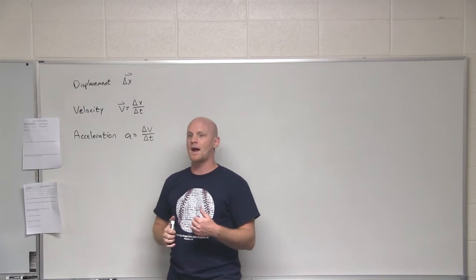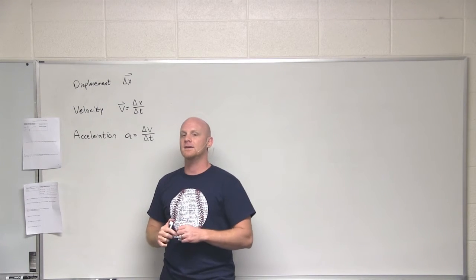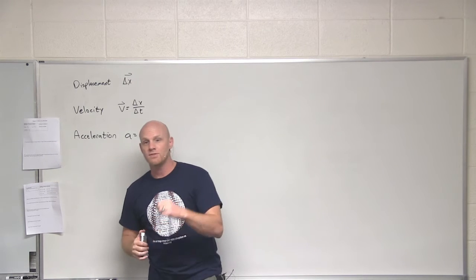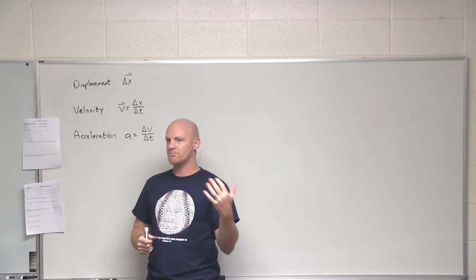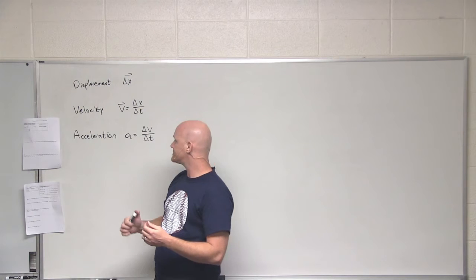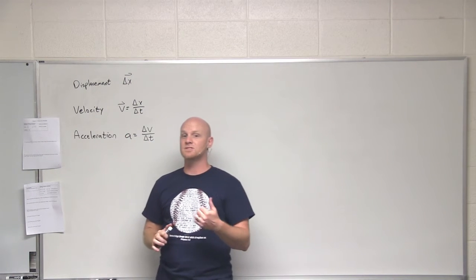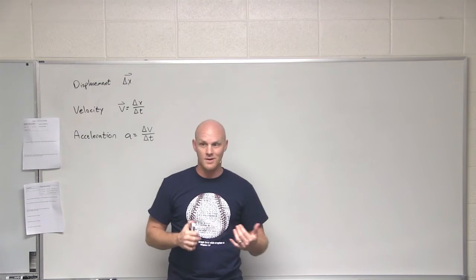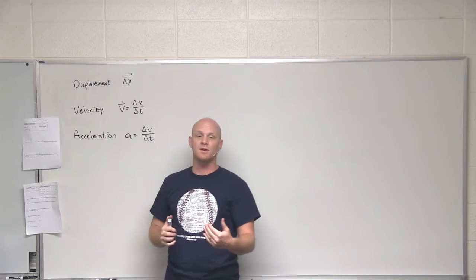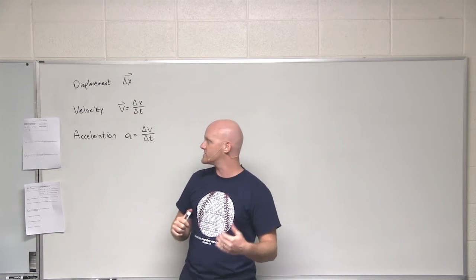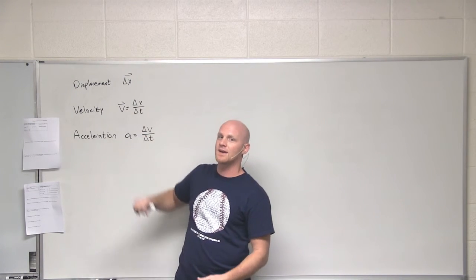If I told you I was doing 20 miles per hour in my car, that is a scalar. If I said I was doing 20 miles per hour due south, that is now a vector. It has both magnitude and direction. Velocity, we also got to compare and contrast that to speed. Speed is the scalar equivalent. If I said I'm doing 20 miles an hour, that's a speed. There's no direction associated with it whatsoever. But velocity has a direction.